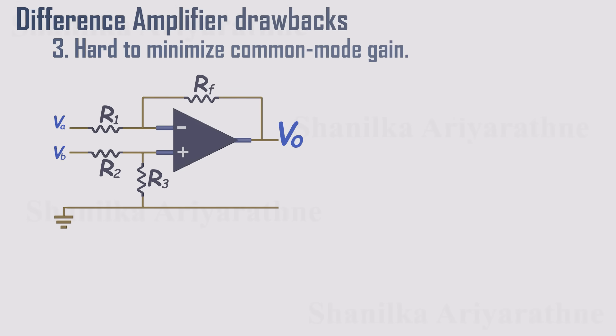And the third problem is poor common mode rejection. In theory, the output should just be the gain multiplied by the difference between the two inputs. That's the ideal case.